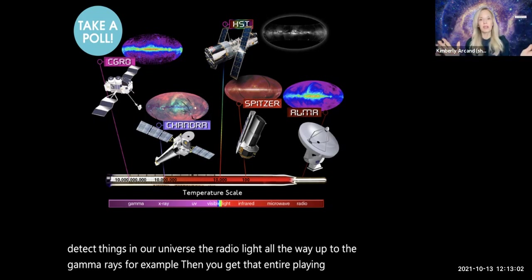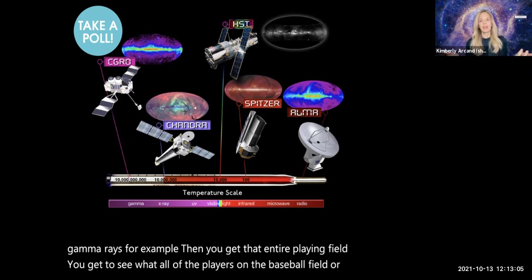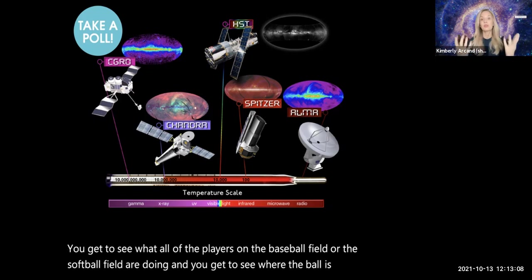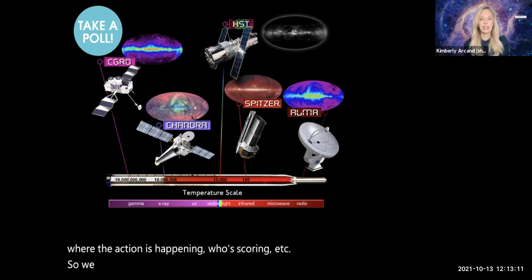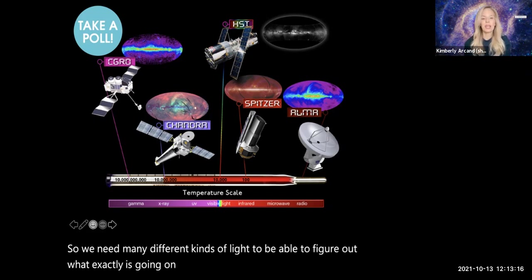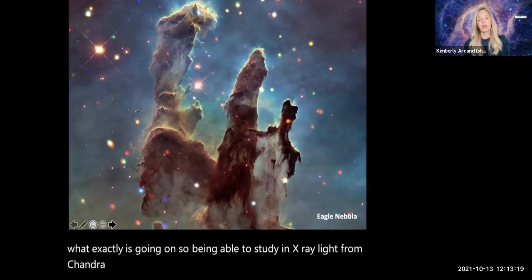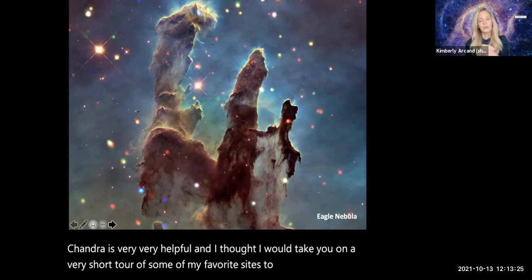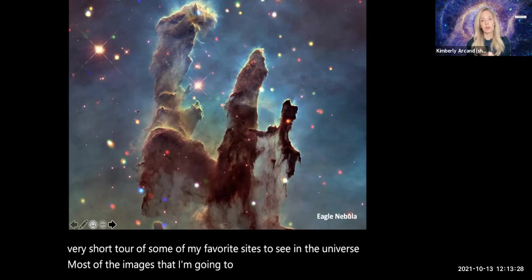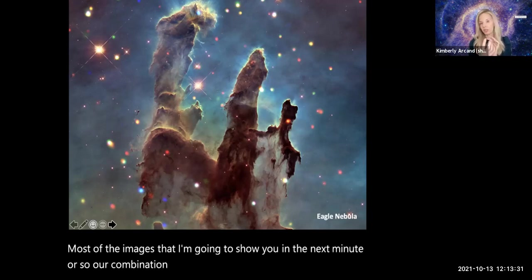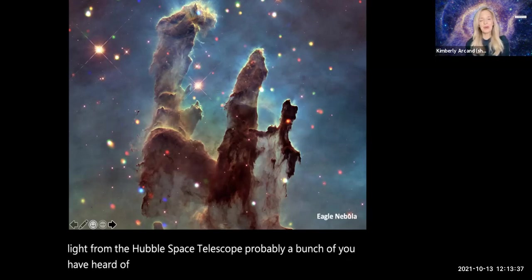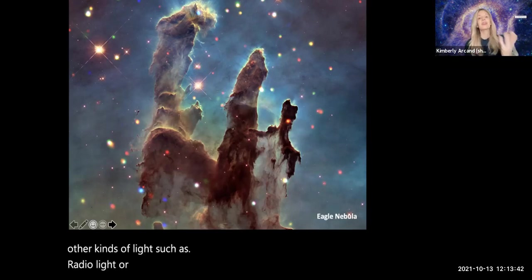When you get to use all of the different kinds of light that we can use to detect things in our universe, the radio light all the way up to the gamma rays, then you get that entire playing field. You get to see what all of the players on the baseball field are doing. And you get to see where the ball is, where the action's happening. So we need many different kinds of light to be able to figure out what exactly is going on.